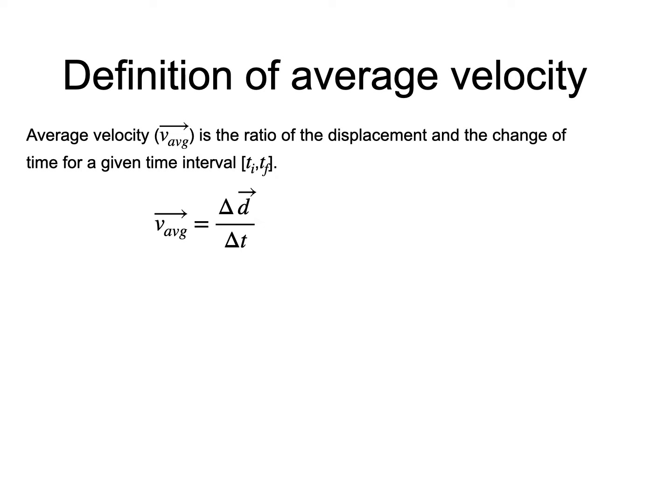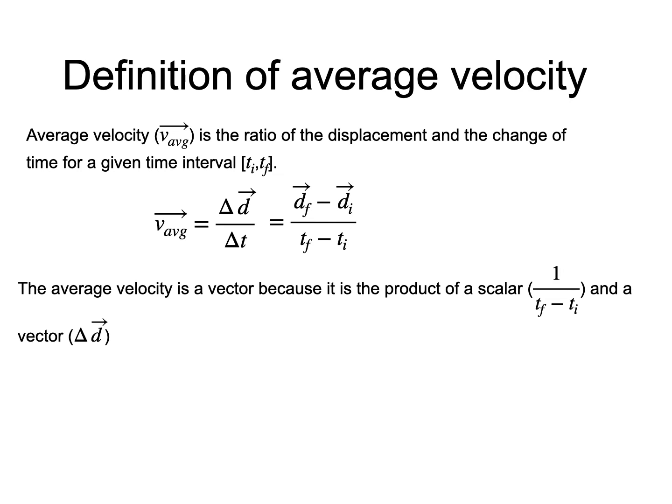And if you recall the definition of the delta, we can also write it this way. The average velocity is a vector because the expression can also be viewed as the product of the scalar 1 over delta t with the vector displacement.